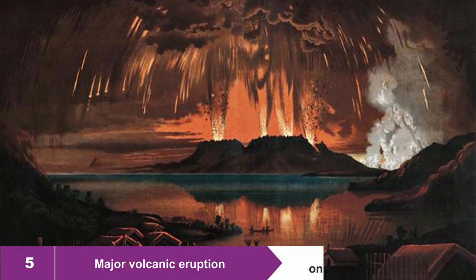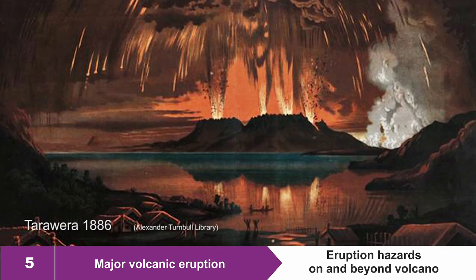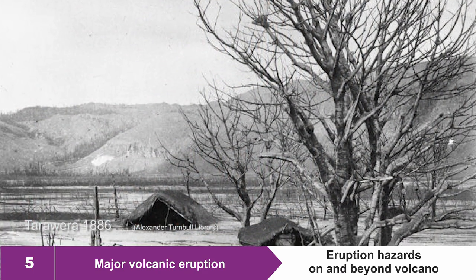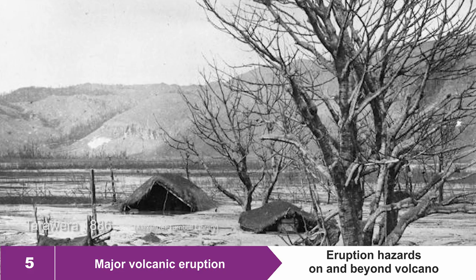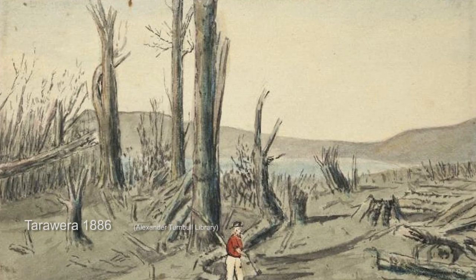Volcanic alert level five is a major volcanic eruption where we have significant hazards on the volcano and could be affecting communities way away from the volcano.